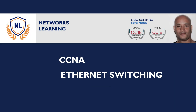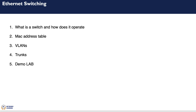In this session we will look at Ethernet switching for CCNA level. We start by talking about what is a switch and how it operates. We will look at the MAC address table and how it is built, and we will look at VLANs and trunks. Finally, we will consolidate our theory by going through a demo lab.